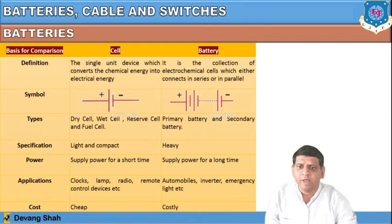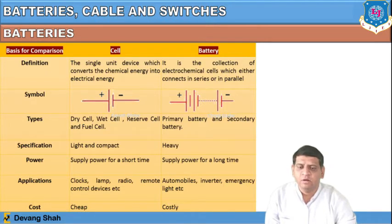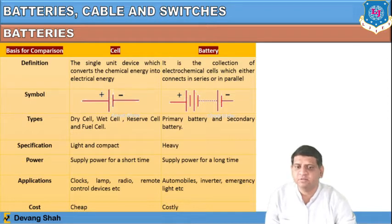Applications of a cell include clocks, lamps, radios, and remote control devices used in daily life. Batteries are used in automobiles, inverters, emergency lights, and elevator systems. The cost of a cell is cheaper than that of a battery; the cost of a battery is higher.